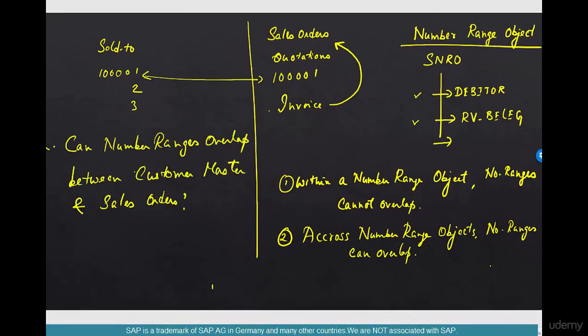Meaning, across number range objects, number ranges can overlap. So once again, the question: can number ranges overlap between customer master and sales order? The answer is yes. The key is to understand that number ranges are unique at the number range object level — within a number range object there cannot be an overlap, but across number range objects there can be.